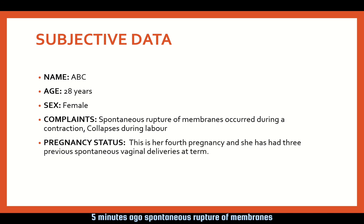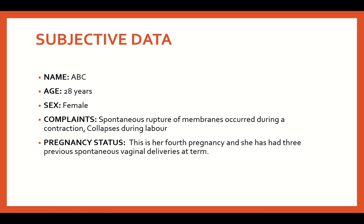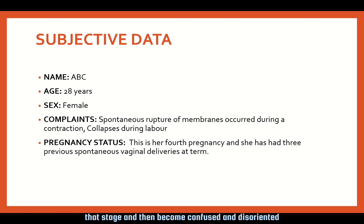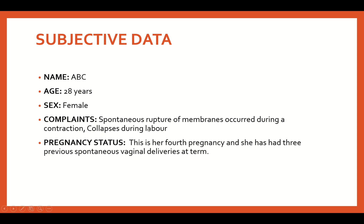5 minutes ago, spontaneous rupture of membranes occurred during a contraction with a large gush of clear fluid from the vagina. The woman reported an urge to push at that stage and then became confused and disoriented, saying that she could not breathe and was going to die. Immediately following this, she collapsed during labour.